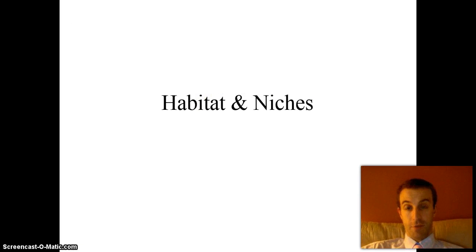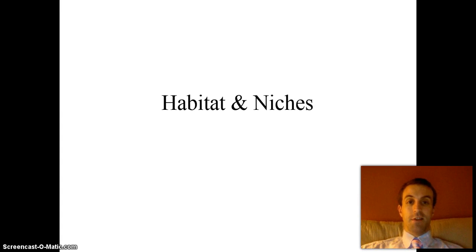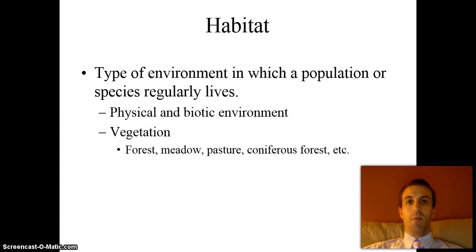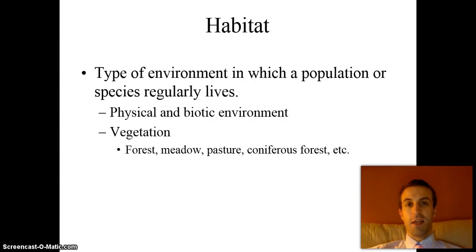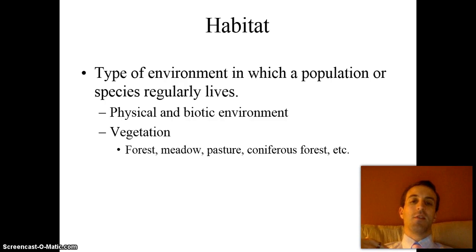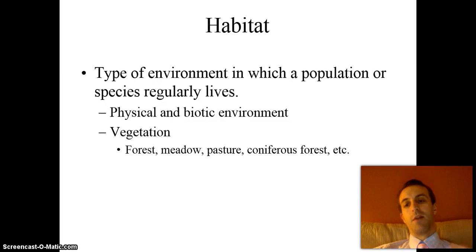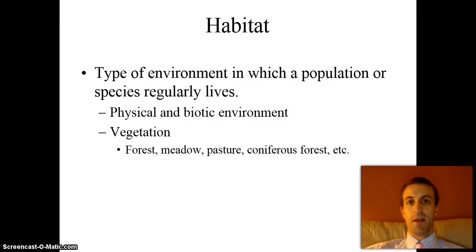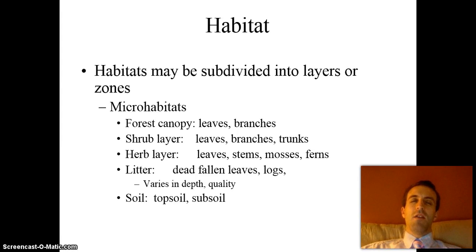Here is the new stuff: the definitions for habitat and niches — some people pronounce it 'niches,' I prefer 'niches.' A habitat is any environment where a population or a species regularly lives. You don't often find polar bears outside of the Arctic, and you don't often find the desert kangaroo rat outside of the desert. It deals with its physical and biotic environment: what kind of vegetation, tree coverage, and temperature you find there.